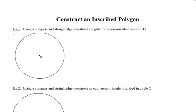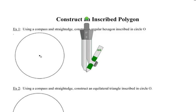To construct an inscribed polygon, we're going to retrieve our compass and straight edge. Using our compass and straight edge, construct a regular hexagon inscribed inside of circle O. I'm going to start this construction by using a line segment to connect the center of my circle, which will always be represented by a dot, with any point on the circle. I'm going to be as exact and as precise as I can when completing this construction.